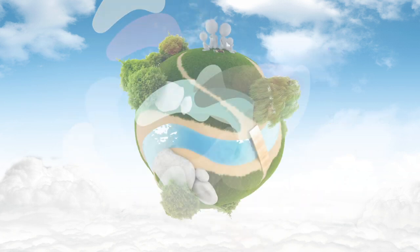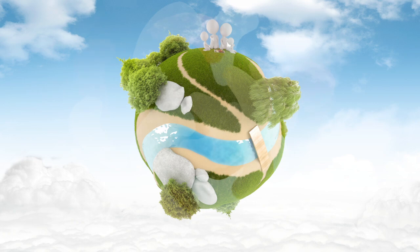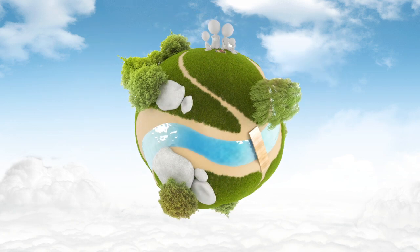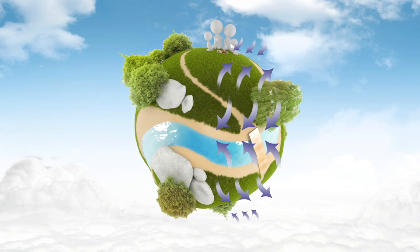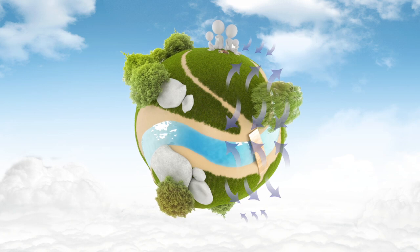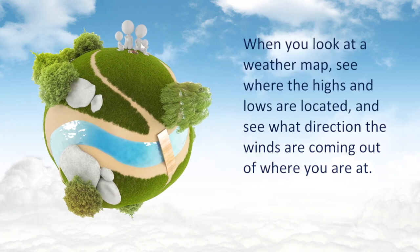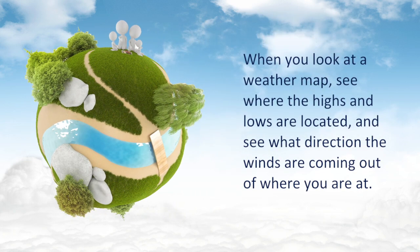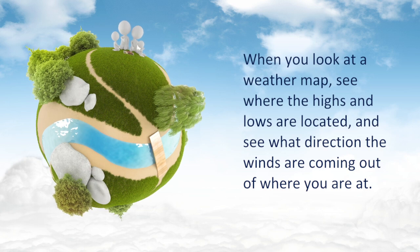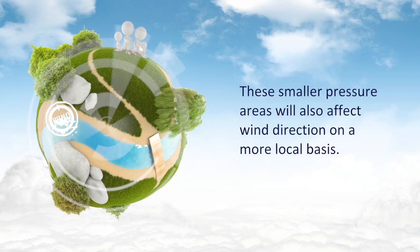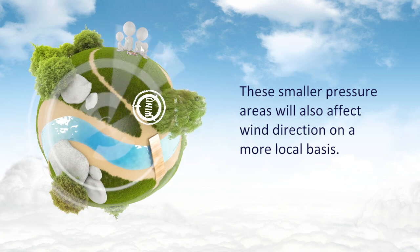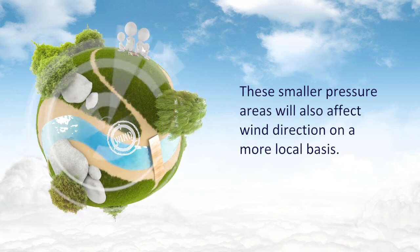Where do you live on Earth, and what direction does your weather come from? You'll notice that it will be mostly controlled by what major band of winds you are in. When you look at a weather map, see where the highs and lows are located, and see what direction the winds are coming out of where you are. These smaller pressure areas will also affect wind direction on a more local basis.